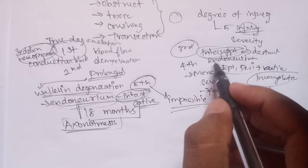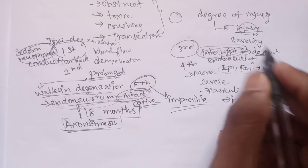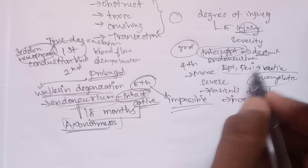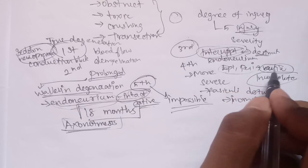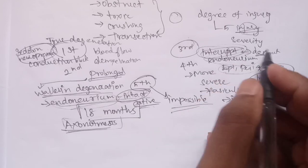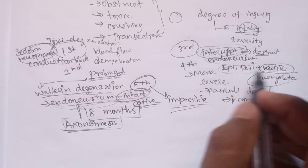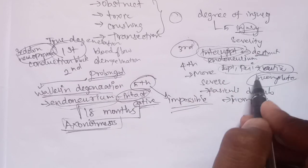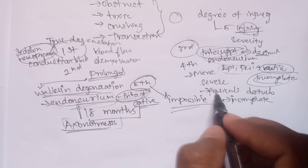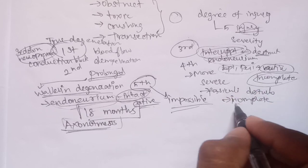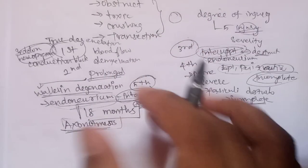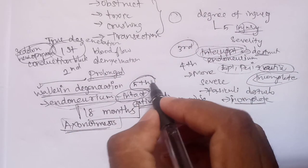The axon is intact in some layers — this is the epineurium, which is intact. This entire layer is the endoneurium. For the fourth degree, the injury is severe — this physical layer is disrupted. The inner layers are all affected, the whole layer is involved. If the layer beyond the page is disrupted, recovery will be impossible.